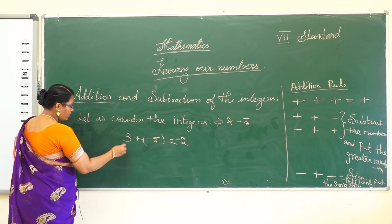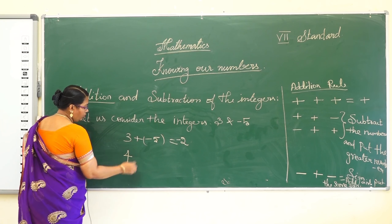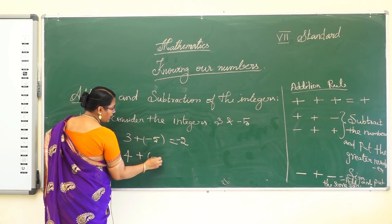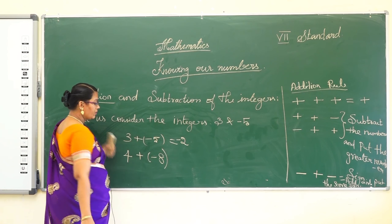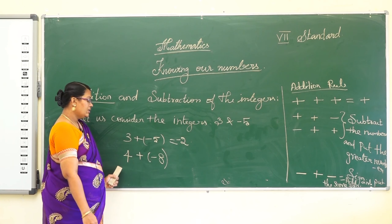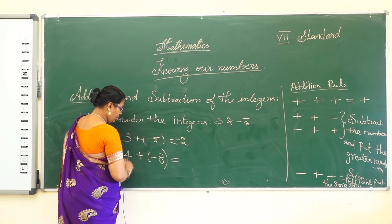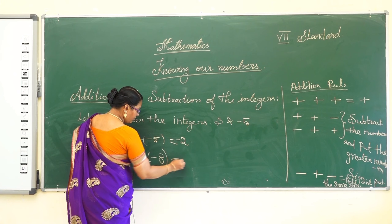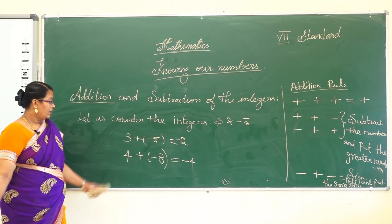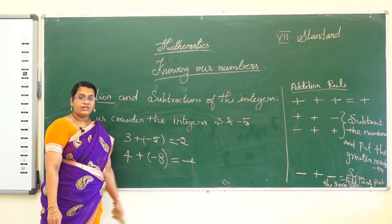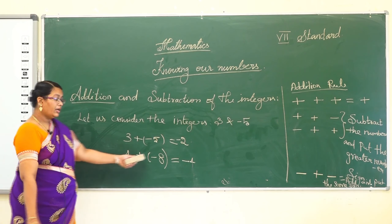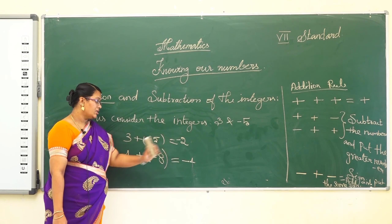Another example: 4 + (-8). Here also there are two different signs, so subtract: 8 minus 4 equals 4. The greater number is 8 and its sign is minus, so the answer is -4.